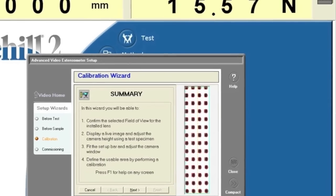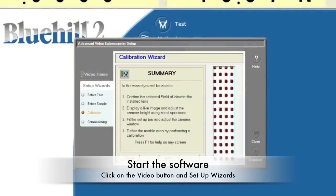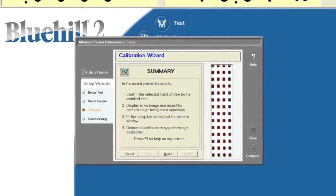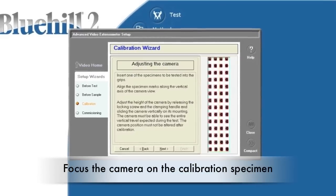Next, open the BlueHill software and click on the video button in the top right corner. Then click on the setup wizards and calibration. Follow the prompts on the screen. First, confirm the correct field of view. Adjust the camera to focus on the calibration specimen.